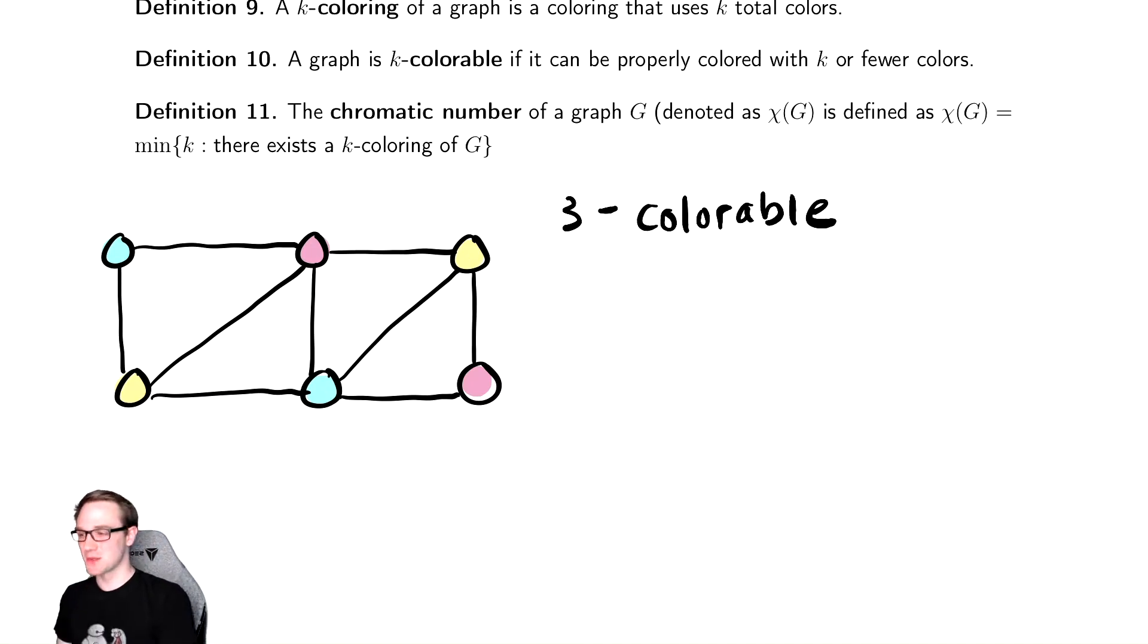And the last thing we have is what's called the chromatic number, which is the smallest number of colors that you need. This may seem like it's something you could probably implement an algorithm to find relatively easily. This turns out to be a very hard problem.